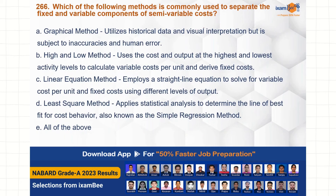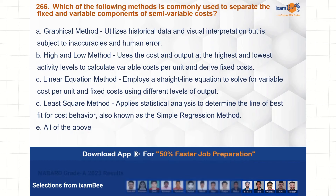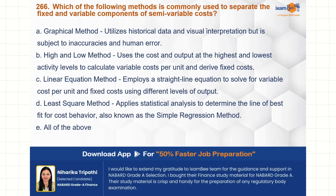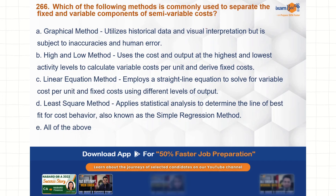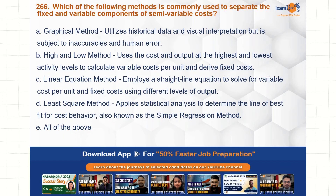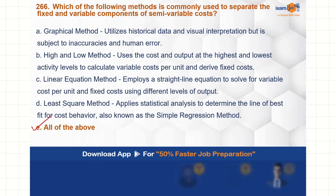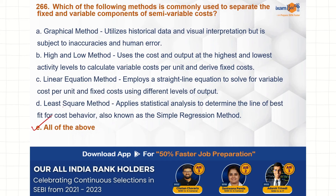Which method is commonly used to separate the fixed and variable components of semi-variable cost? Semi-variable cost has a fixed component and a variable component. It increases with output but not in the same ratio as pure variable cost. Methods such as the graphical method, high-low method, linear equation method, and least squares method are all used to segregate semi-variable costs. All of the above is the correct choice.